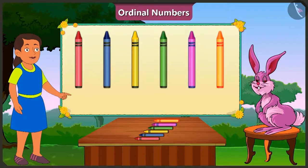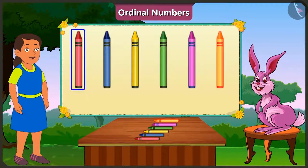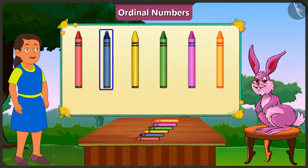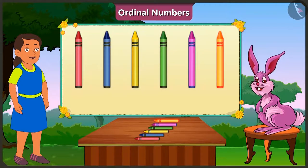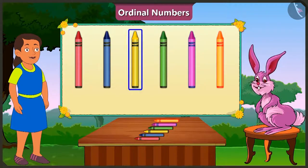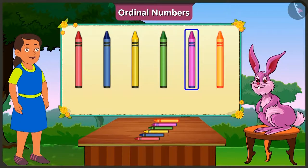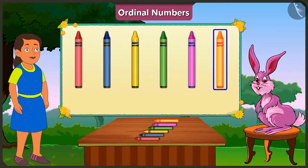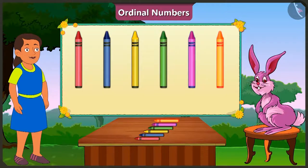I did not understand, Bunny. Okay, let me explain. Look here — the red crayon is at the first place, blue crayon at the second place, yellow crayon at the third place, green crayon at the fourth place, and at the fifth place is the pink crayon.